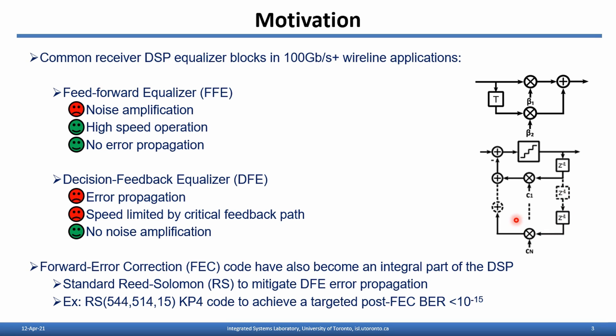In addition, unlike FFE, the critical feedback path in DFE also imposes a timing constraint limiting the maximum operating speed. However, DFE operation relies on the slicer making hard decisions for each symbol; therefore, noise is not amplified by this non-linear feedback operation. In addition, forward error correction codes have also become an integral part of DSP. Standard FEC codes and Reed-Solomon codes are used to mitigate both random errors and DFE error propagation.